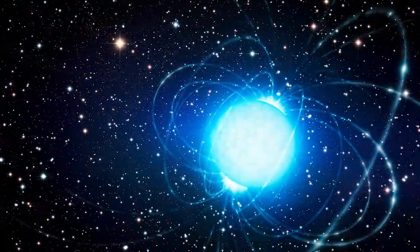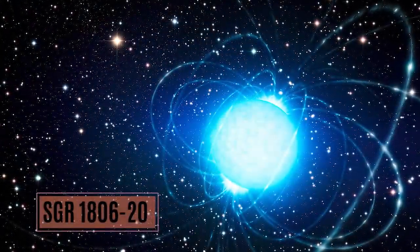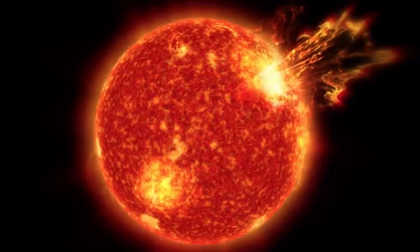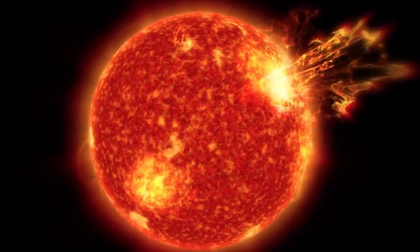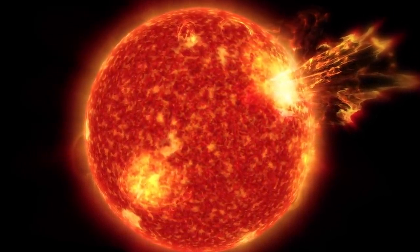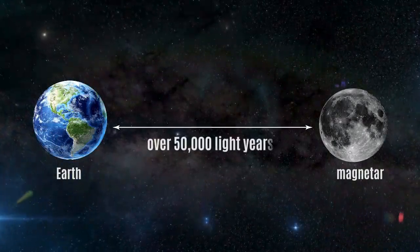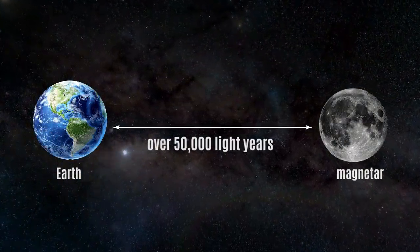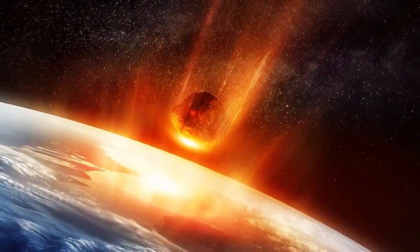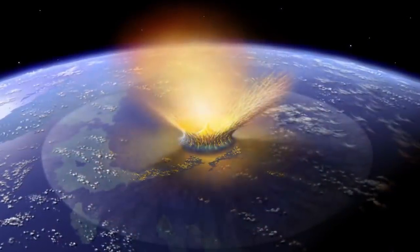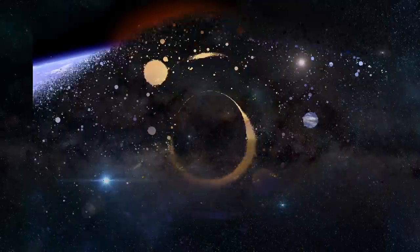Such as the explosion caused by a magnetar named SGR 180620 in December 2004, which in a fifth of a second released more energy than our Sun gives out in 250,000 years. Let's thank our stars that this explosion happened over 50,000 light years away from us, because if it were closer than 1,000 light years, it would have probably triggered a mass extinction event on Earth.